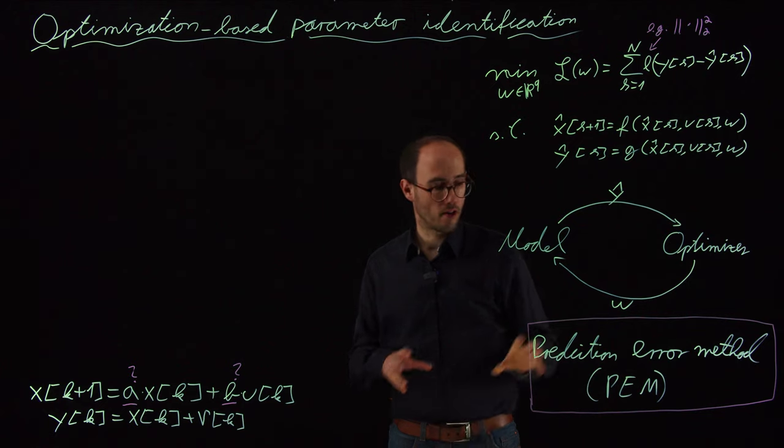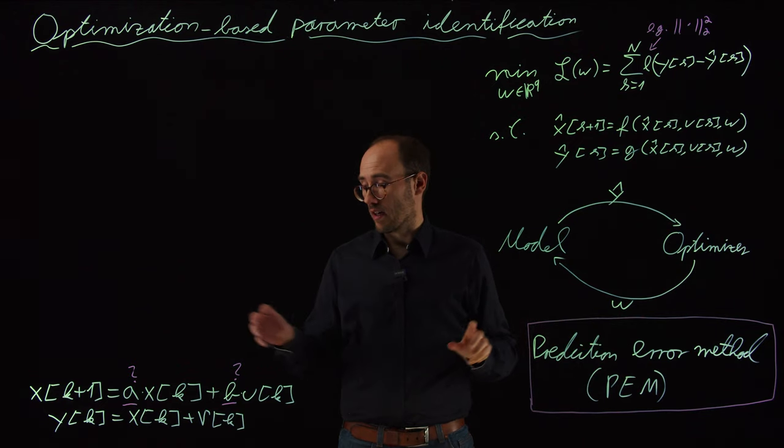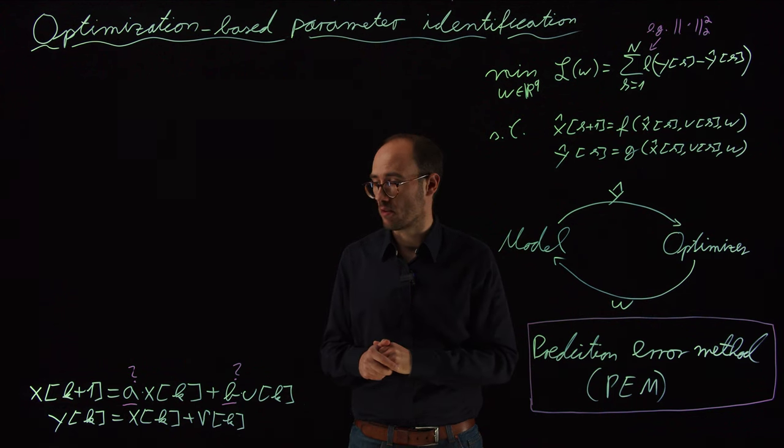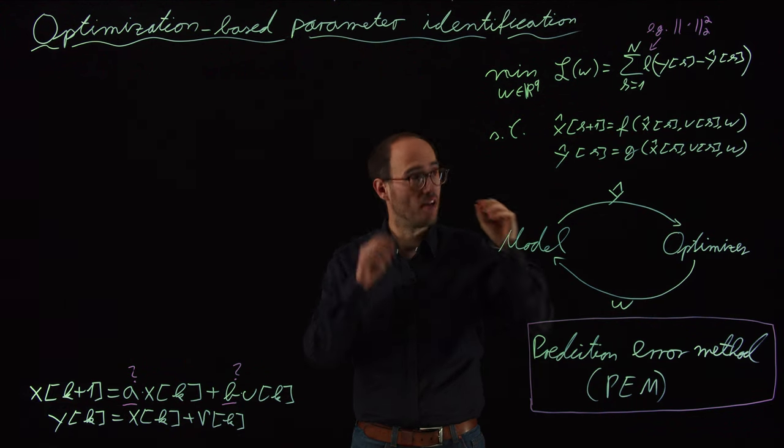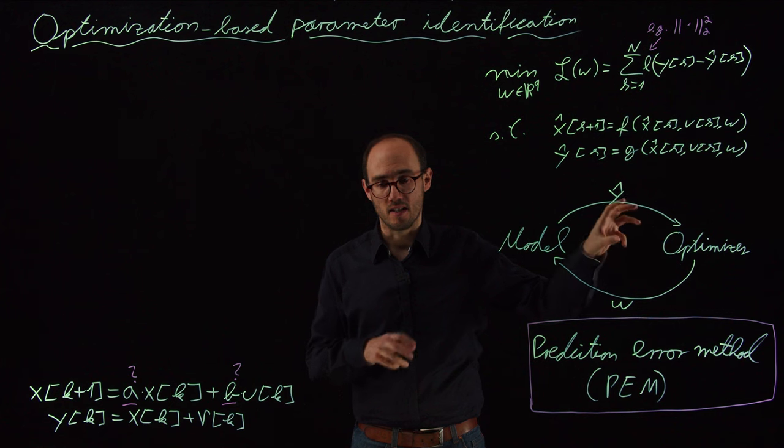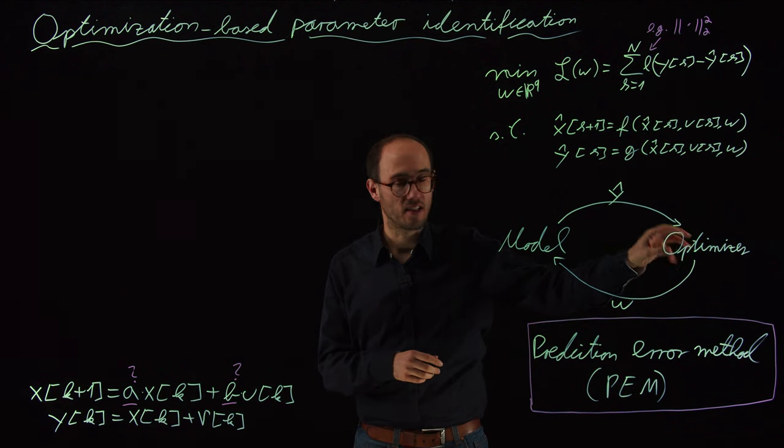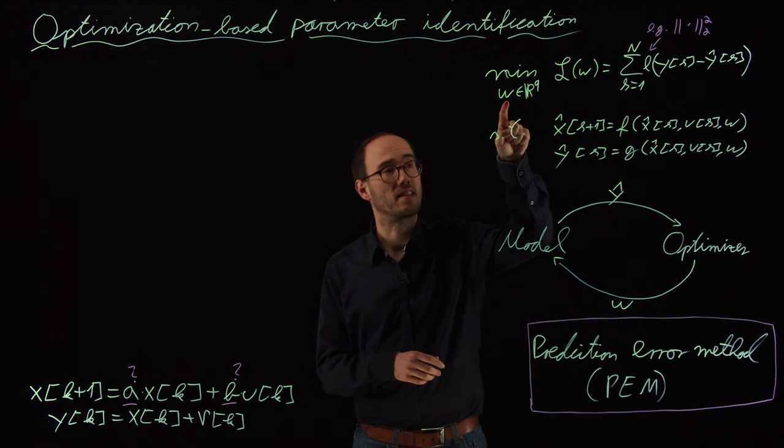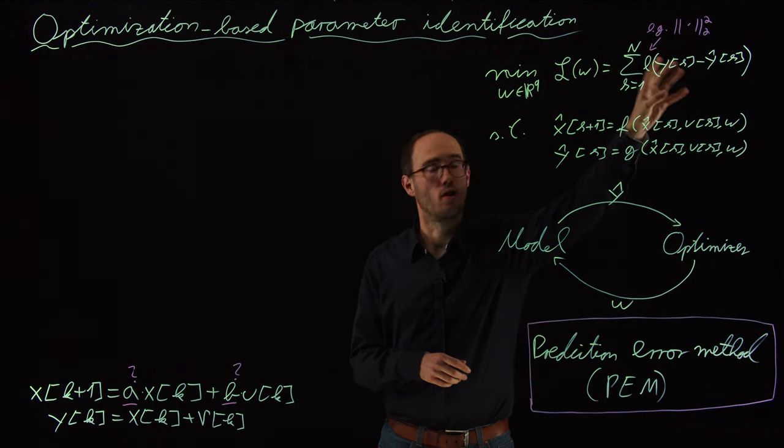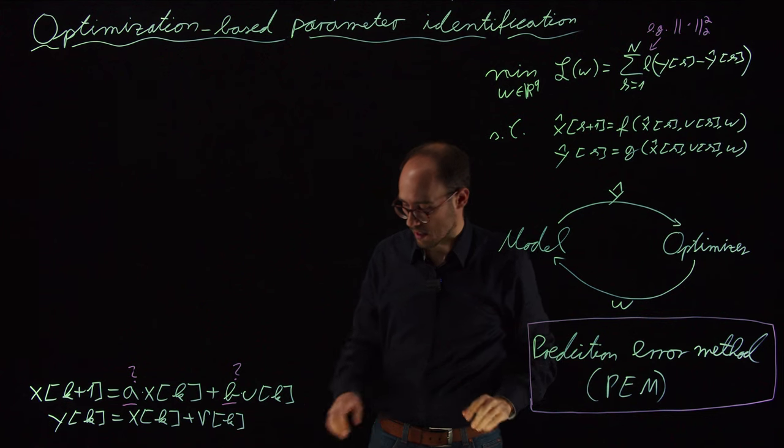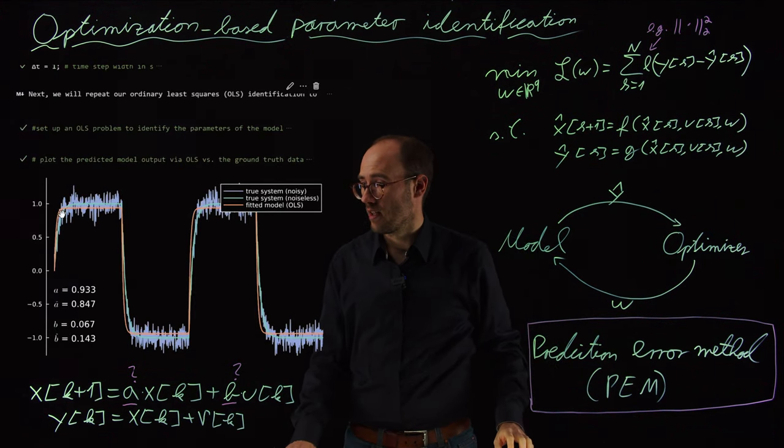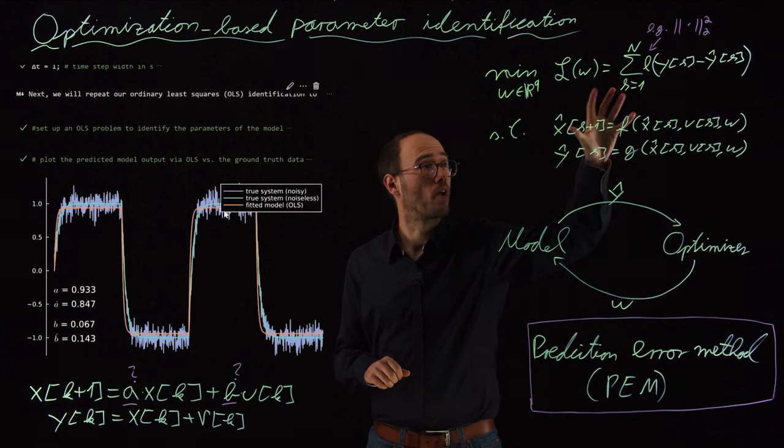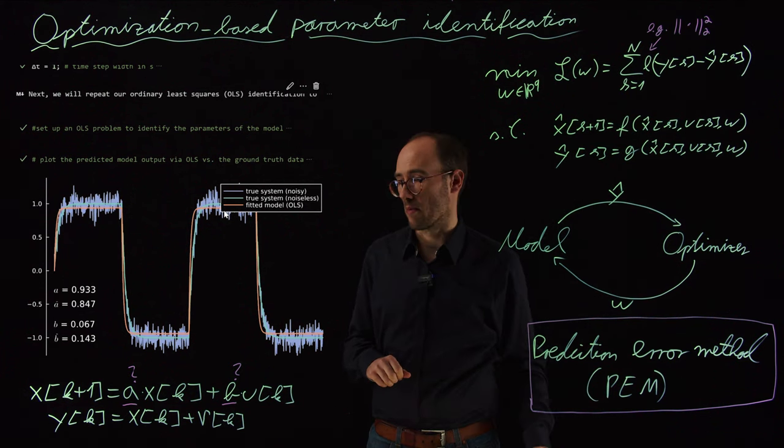So we therefore are going to basically take our example which we had here and we will redo this example not only with ordinary least squares but we are going to plug in a distinct solver, a distinct optimizer which tries to find the best parameter set w such that this loss function is going to be minimized. Therefore, let's go back to our notebook and let's do exactly what we have sketched here with the prediction error method.